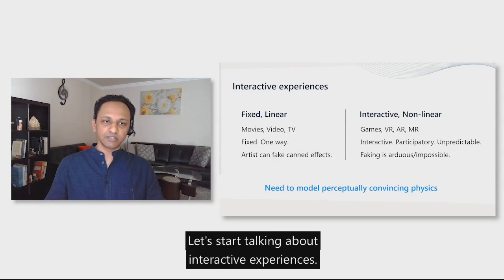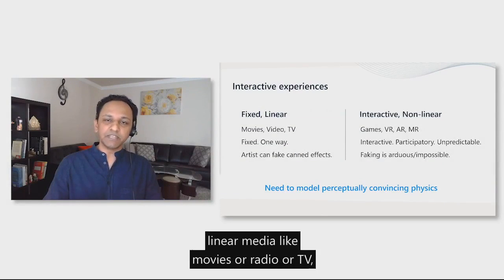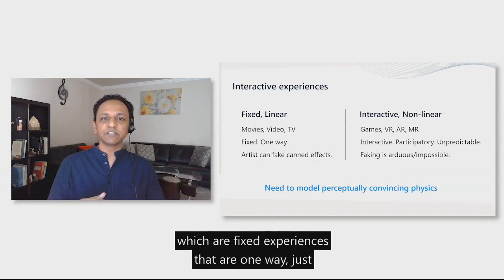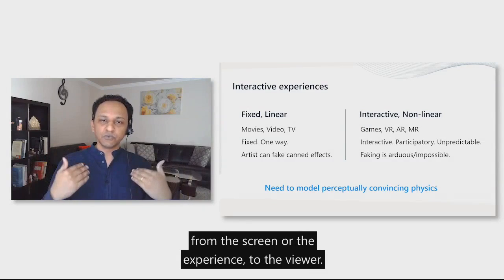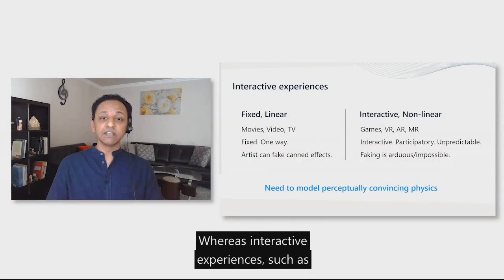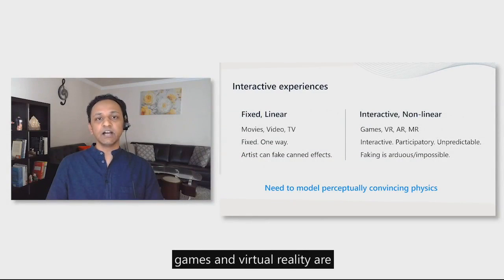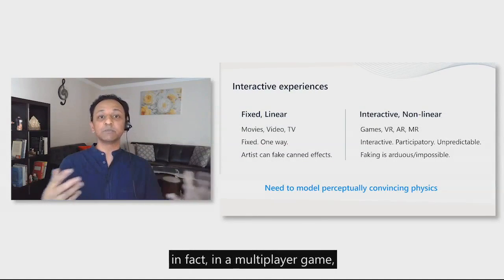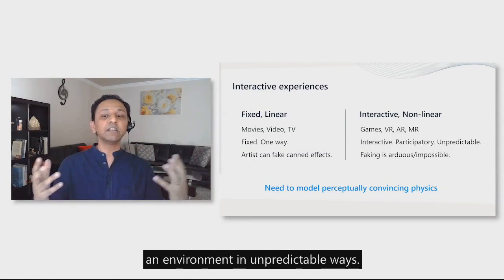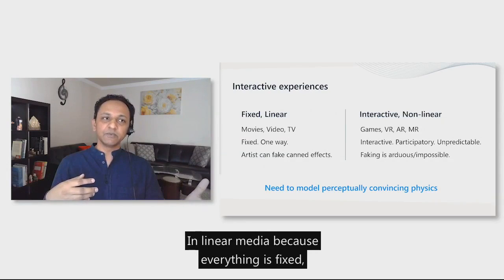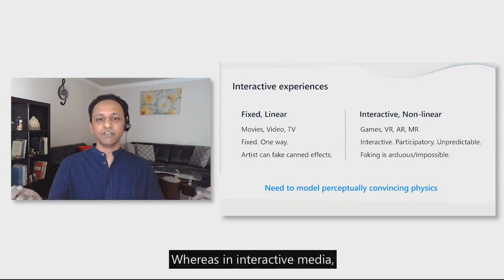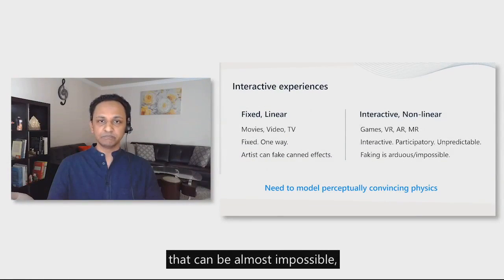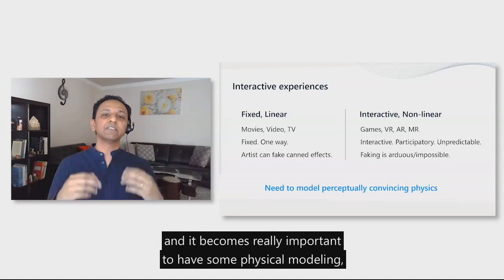Let's start talking about interactive experiences. They can be defined as opposed to linear media, like movies or video or TV, which are fixed experiences that are one way, just from the screen or the experience to the viewer. Whereas interactive experiences, such as games and virtual reality, are much more interactive and participatory. In fact, in a multiplayer game, you can have multiple people interacting within an environment in unpredictable ways. In linear media, because everything is fixed, an artist can more easily fake various effects to create realism and immersion. Whereas in interactive media, that can be almost impossible.